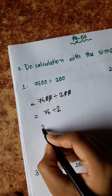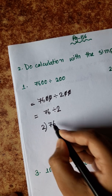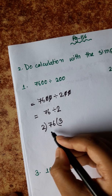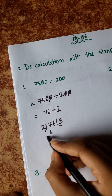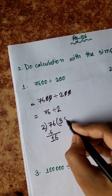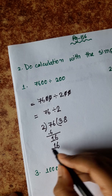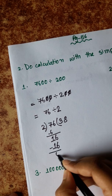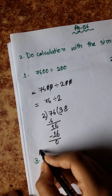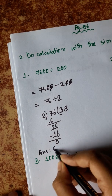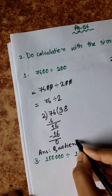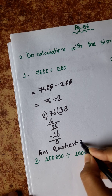This is 76 divided by 2. So: 2 into 76 — 3, 2, 6, 8, 2, 16. So the answer quotient is 38.